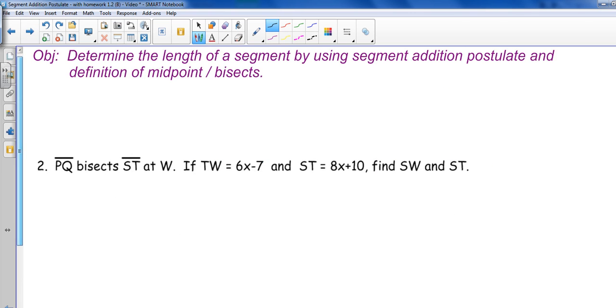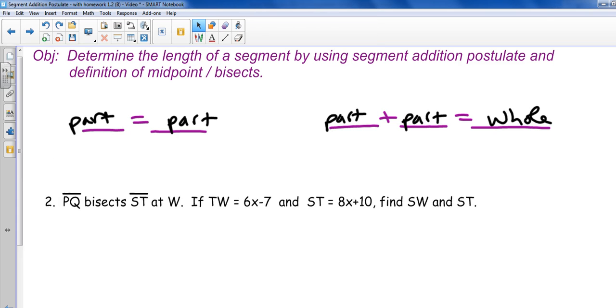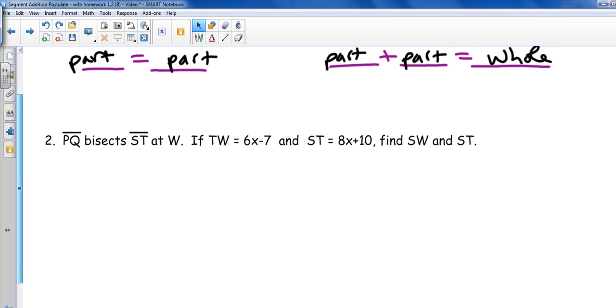Let's look at one more example. I'm going to throw something else at you this time. I'm going to use the word bisects instead of midpoint. But let's go ahead and remind ourselves of our two options here. I can set two things equal, or I can add two things and set them equal to the whole thing. Words I like to put in here, part is equal to part, or part plus part is equal to whole.